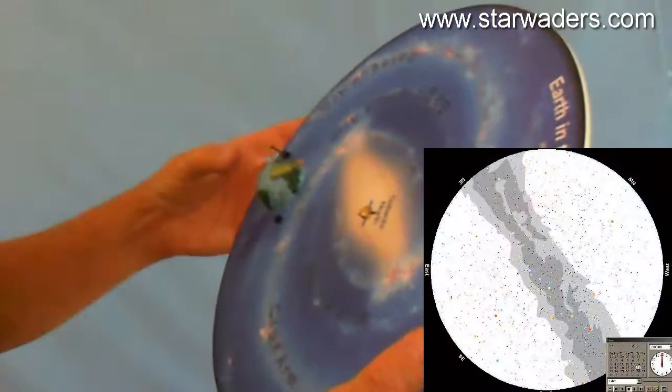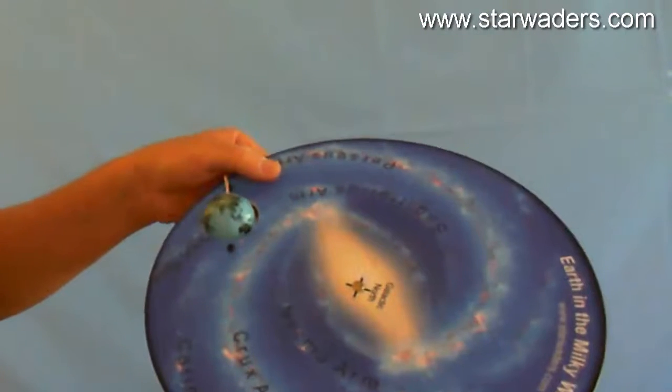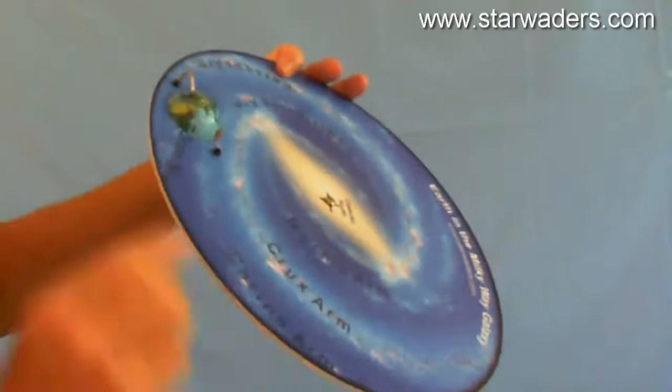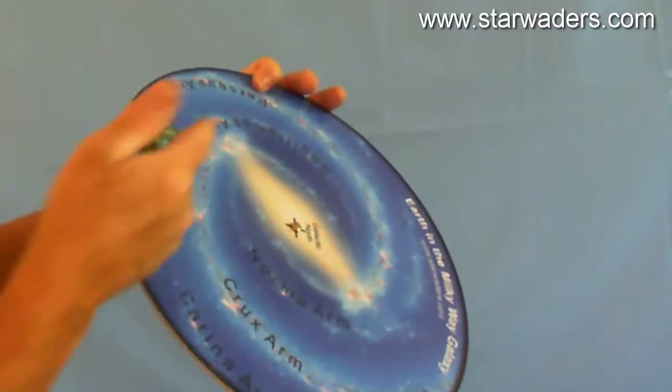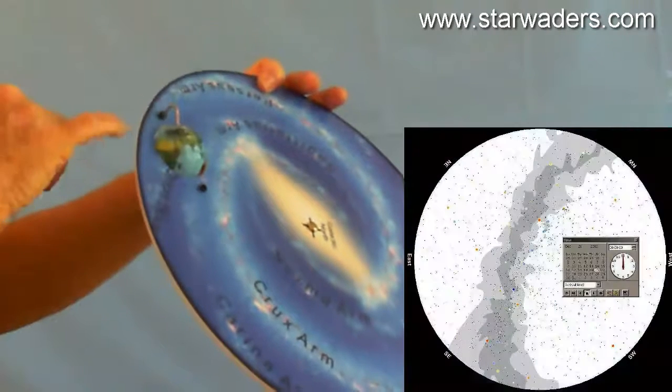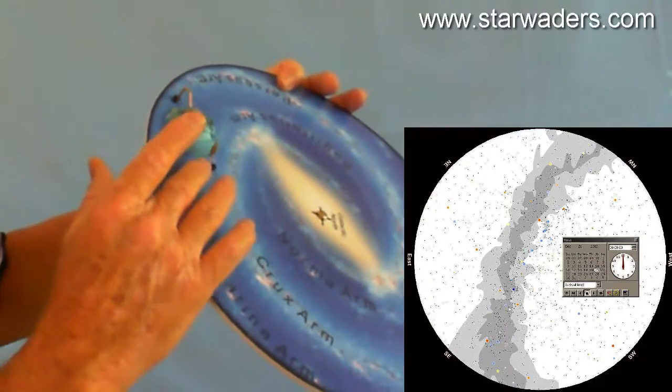Now, 12 hours later, the Earth would be on this side. And if we have a look over here now, we can see the disk of the Milky Way is now no longer from northeast to southwest, but it is now from northwest through to southeast. So that is how you would see the Milky Way arcing over your sky.